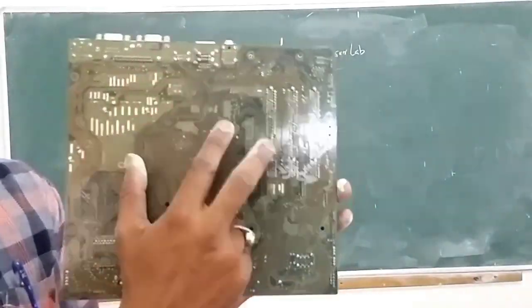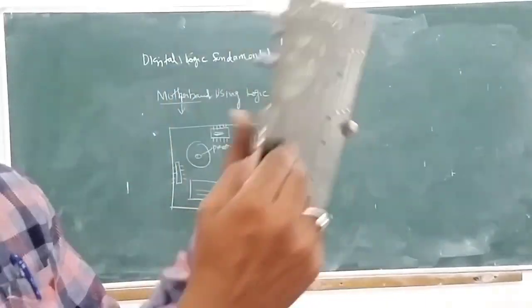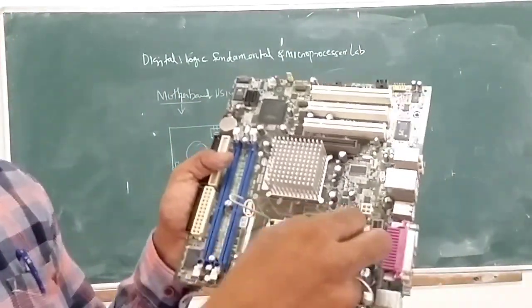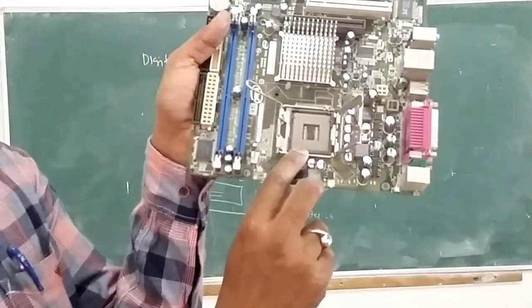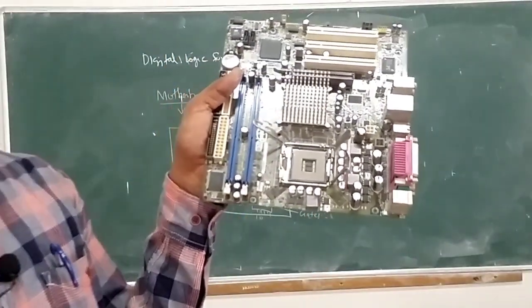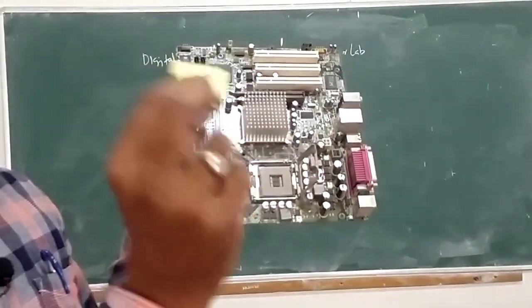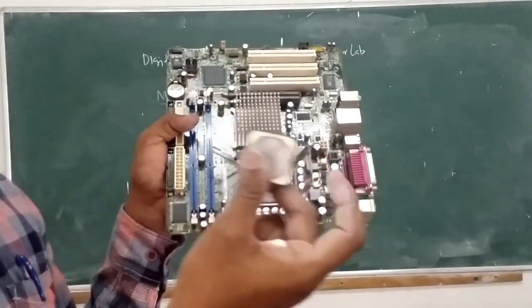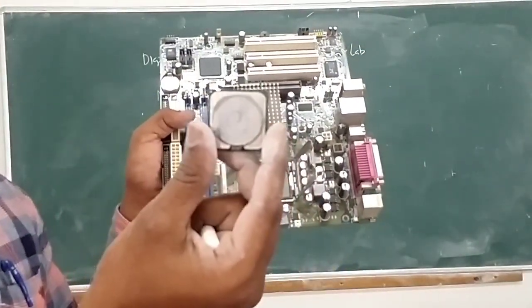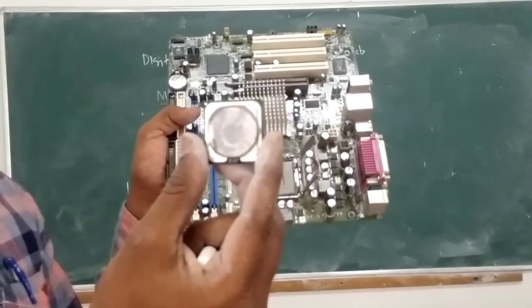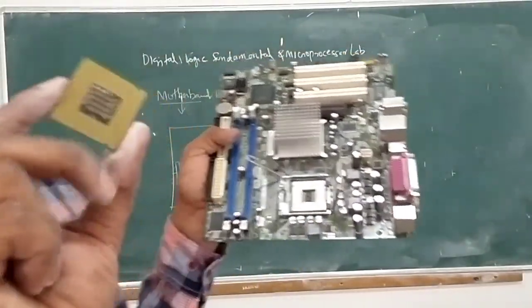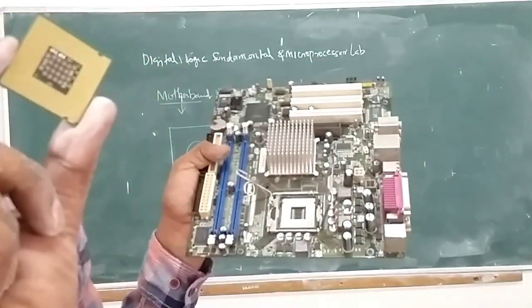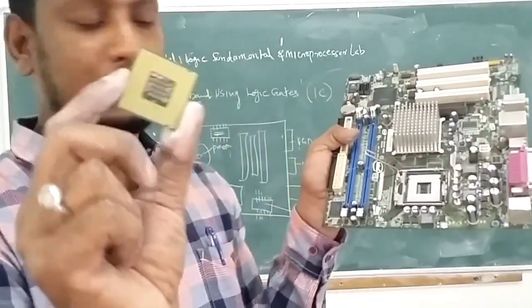This is the full motherboard in use of IC. Again, this is the processor — you can use the processor. The processor is the heart of the motherboard, same as a person's heart. The processor is included in the motherboard design. The processor is already created using digital fundamental gates.